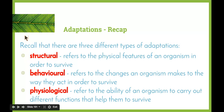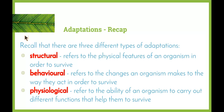We have three different types of adaptations. Structural adaptations refer to the physical features of an organism that allow it to survive in its environment. Behavioural adaptations refer to changes an organism makes to the way it acts in order to survive. Physiological adaptations refer to the ability of an organism to carry out different functions that help it survive. Note the three definitions end with the same idea — to be able to survive — because if a change doesn't help an organism survive, it's not technically an adaptation. Structural and behavioural adaptations are visibly observable, whereas physiological adaptations take place within the organism and can be trickier to see or understand.